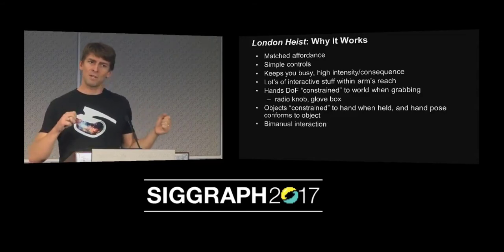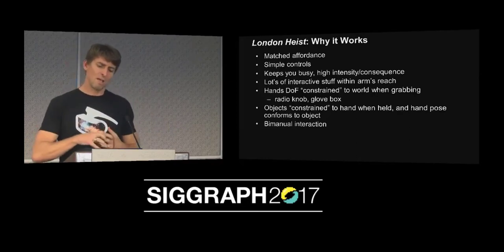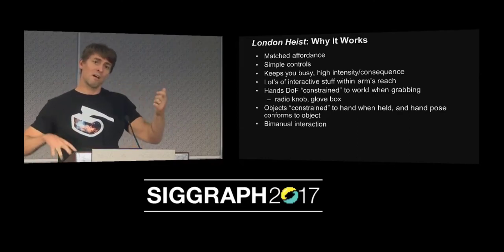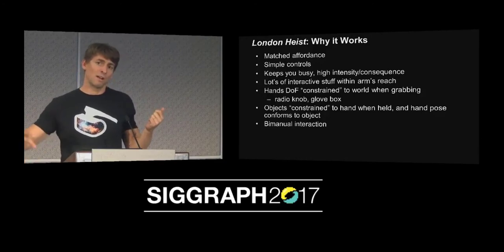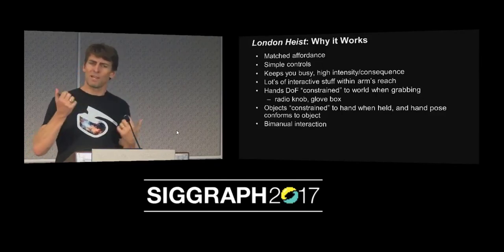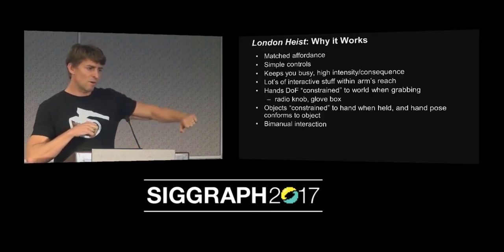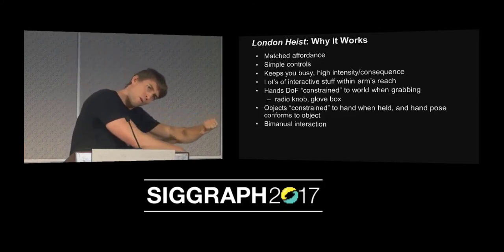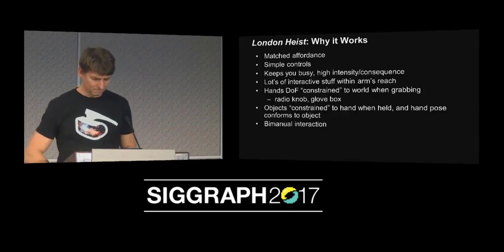There's a lot of bimanual interaction. You can pick objects up and switch hands with them, but you also eventually get a gun and ammunition, and the only way to load the gun is to have one hand with the ammunition and the other hand with the gun and put them together — you have to use two hands together. People get really good at using their hands together. There's a door where you can open up and lean out, so people hold the door open — otherwise it closes — so they're doing multiple things with their hands at the same time.